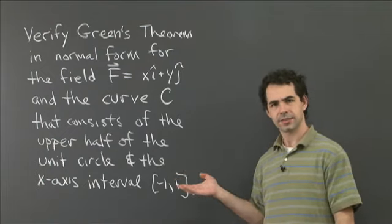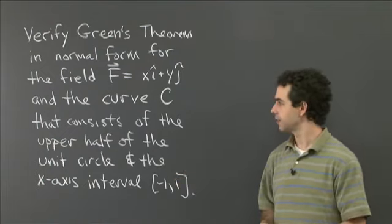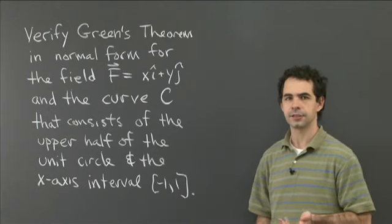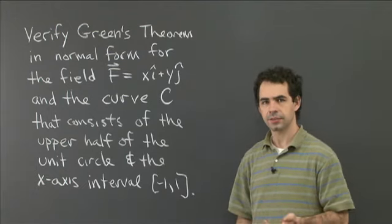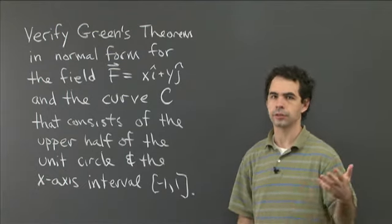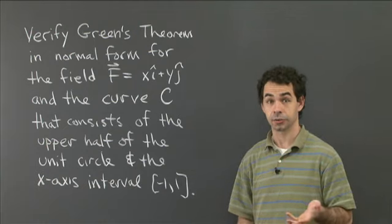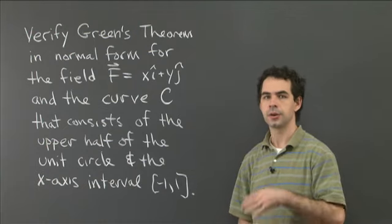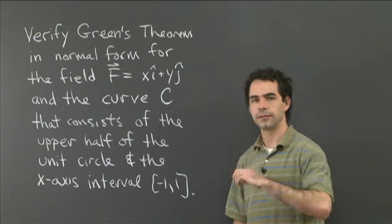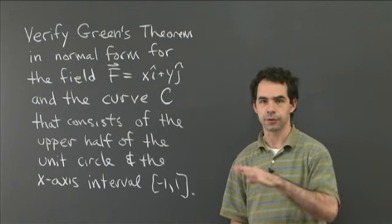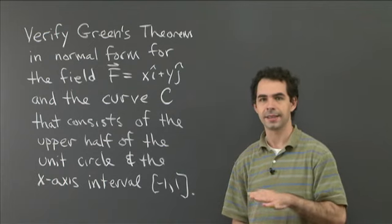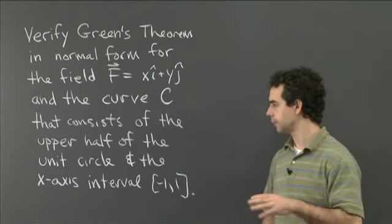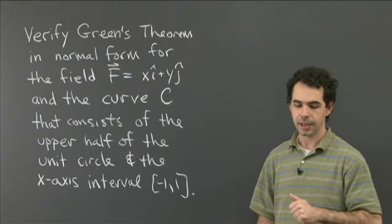Hopefully you had some luck with this. Green's theorem tells you that the flux across a curve — which we usually compute as a line integral — is also equal to an integral of the divergence over the region bounded by that curve. The curve has to be a closed curve so that it bounds a region of the plane.